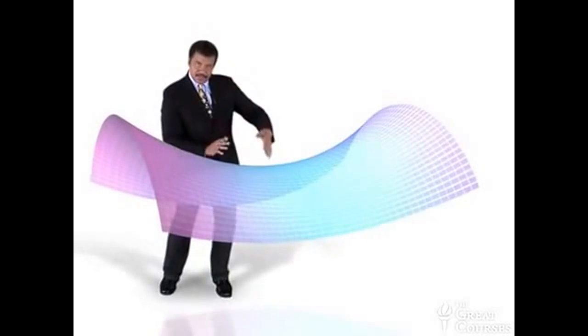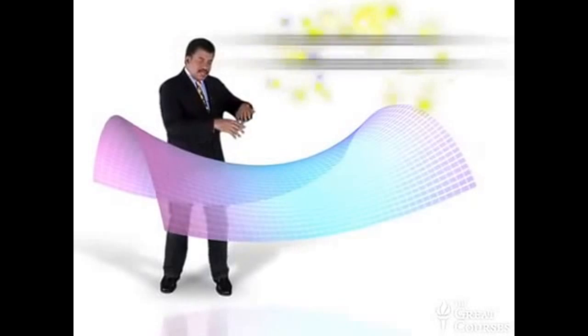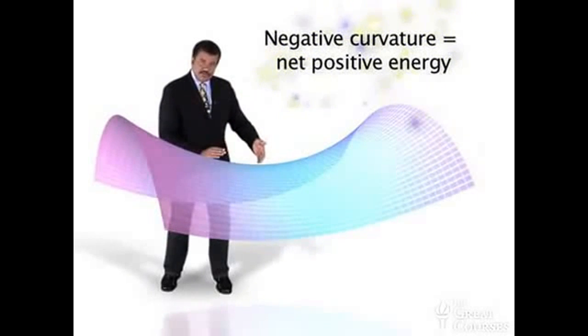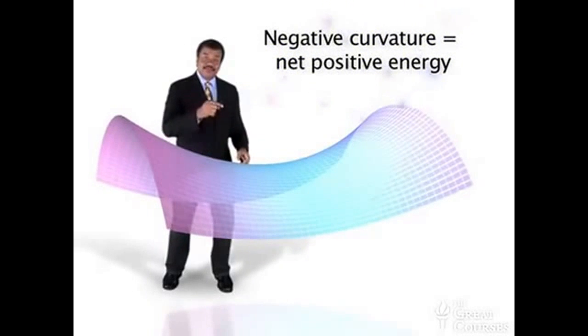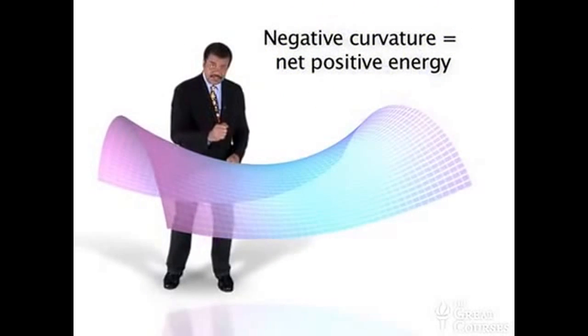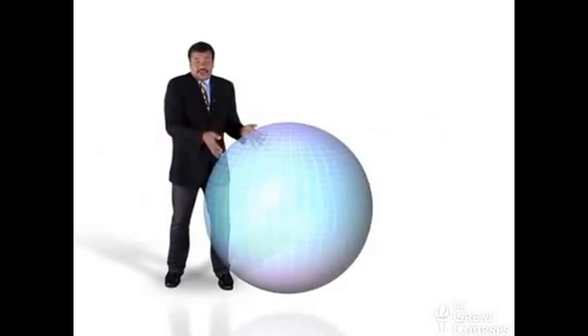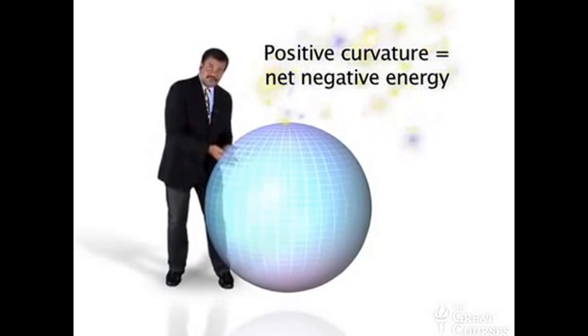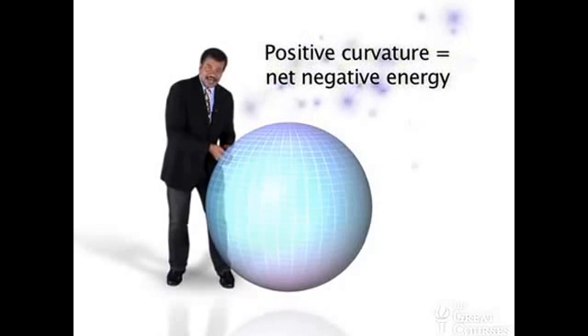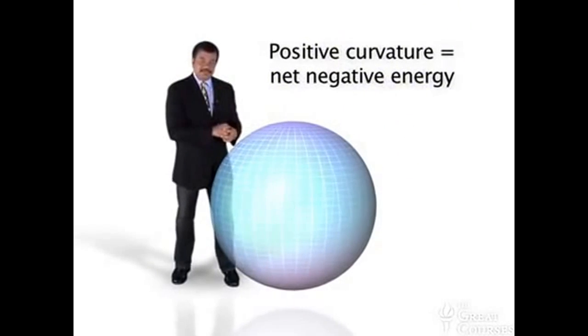The universe could have negative curvature, and if it did, that would have a saddle shape. A negatively curved universe has a net positive energy. The universe is neither a spherical shape — the shape of a ball — that would be positive curvature, having net negative energy.